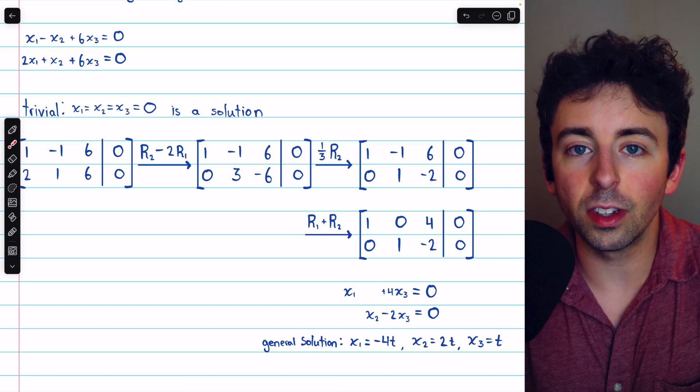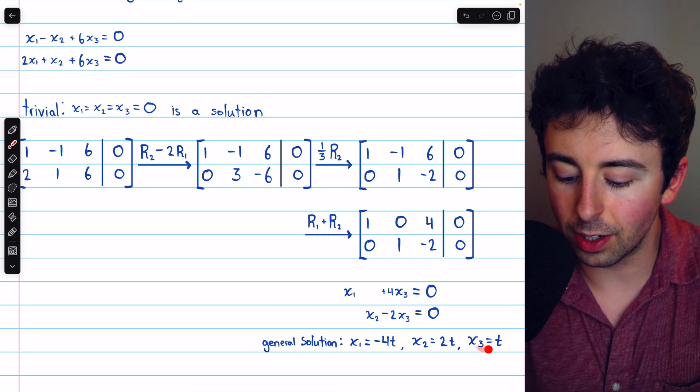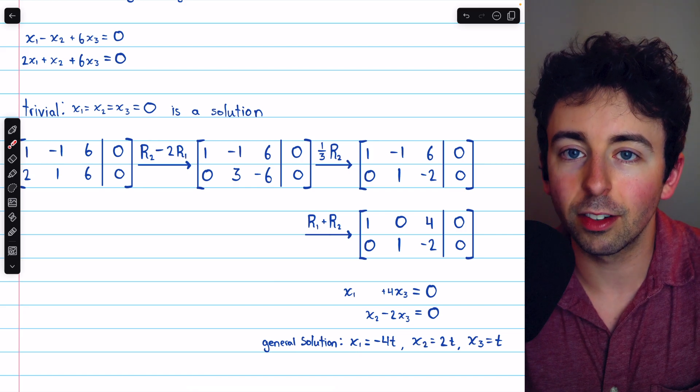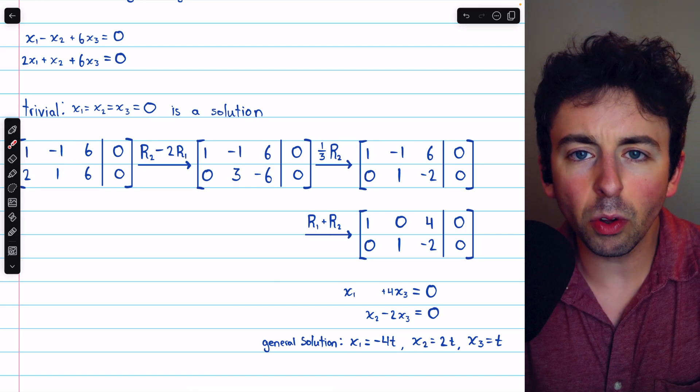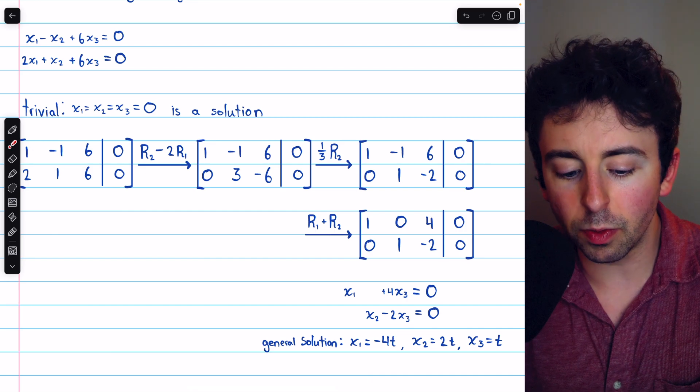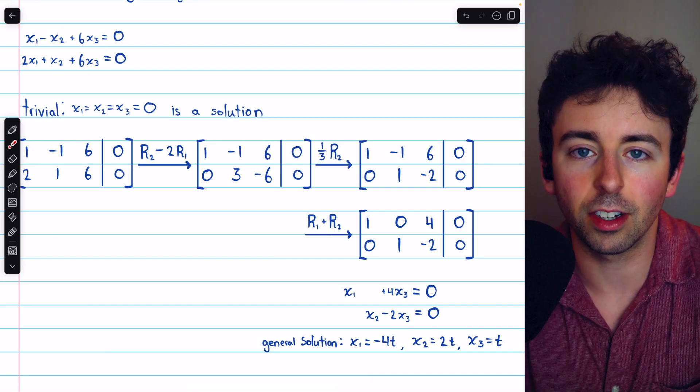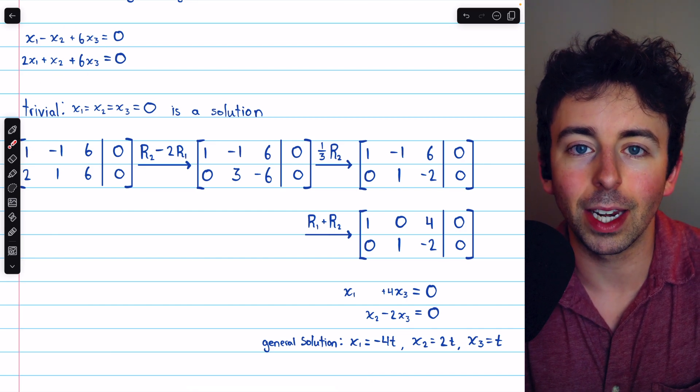We can produce as many solutions as we like by picking values for t and calculating x1 and x2 according to those equations. There's also a way from the beginning that we could have known that this particular system would have infinitely many solutions.